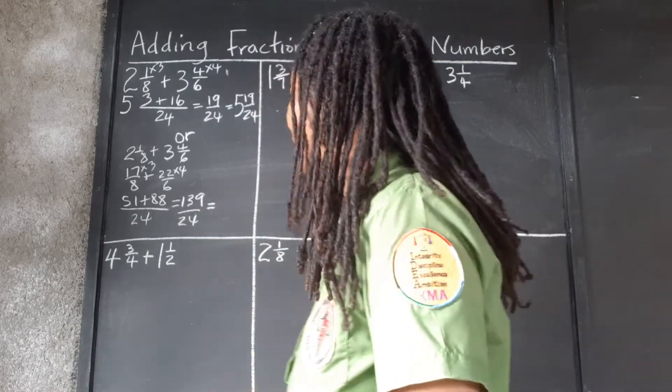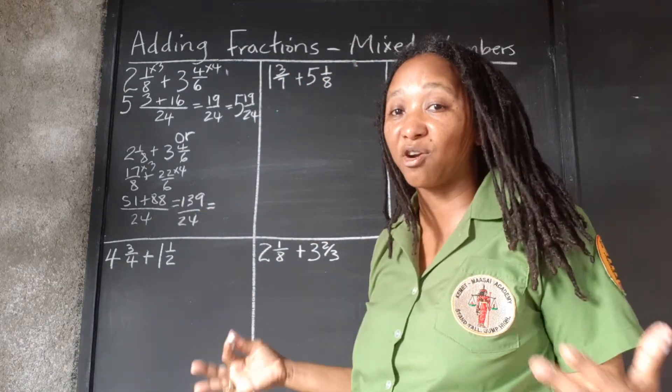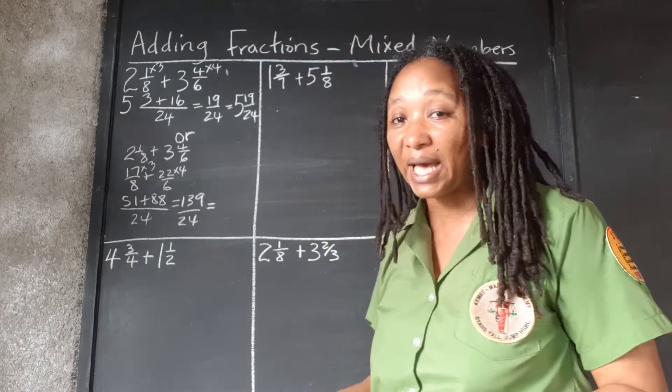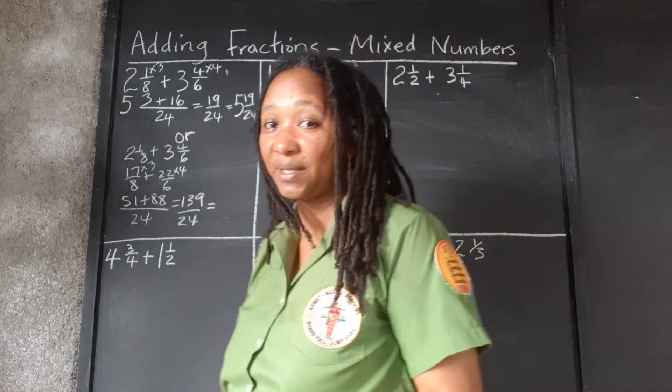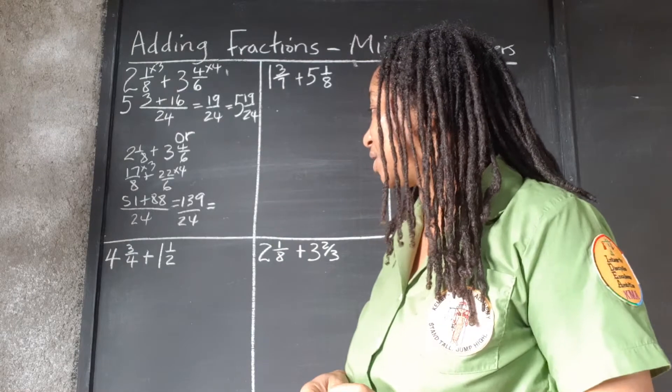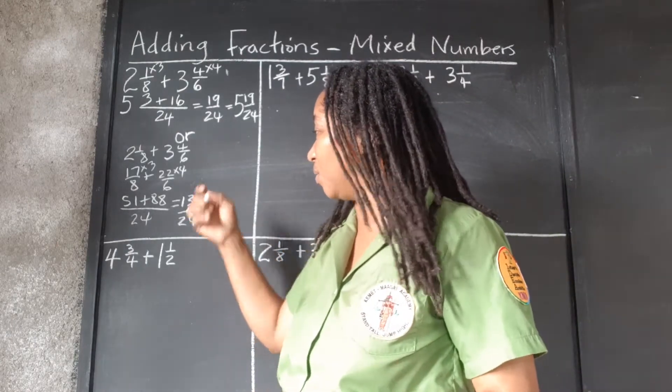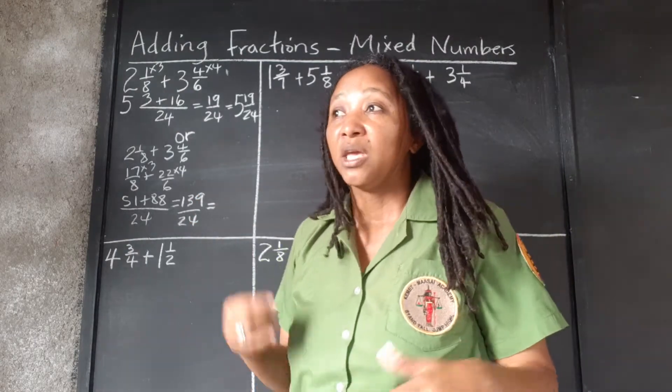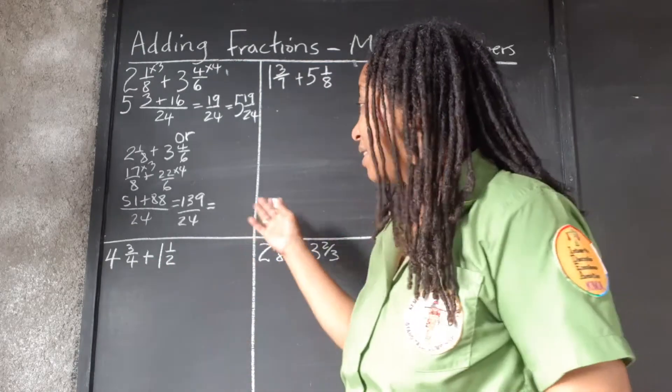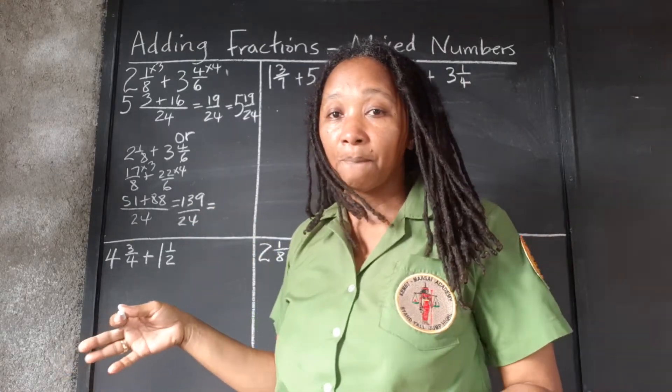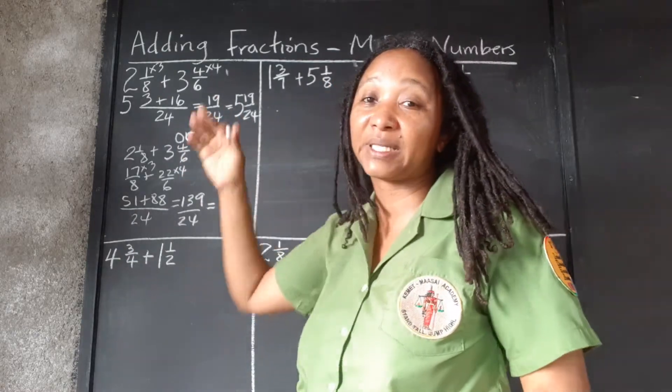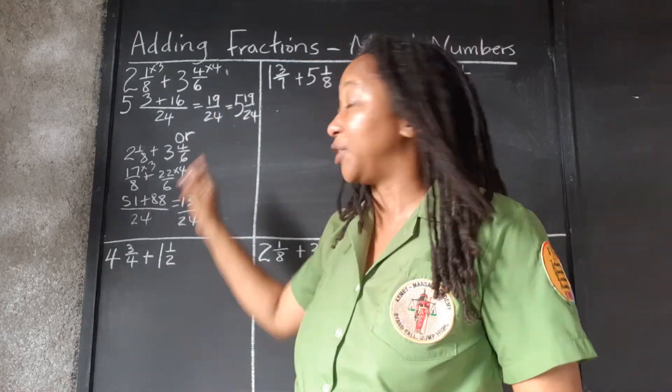Now you will notice when you do this method, you end up with some bigger numbers, which you'll have to go to the side and work out. Which is why I personally prefer this method. So now we have to see how many times, how many 24s we can get out of 139. If you don't know how to do long division or even short division, this might pose a problem for you because you're working with bigger numbers.